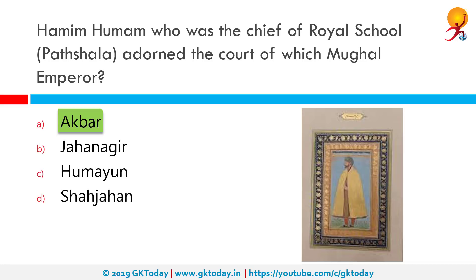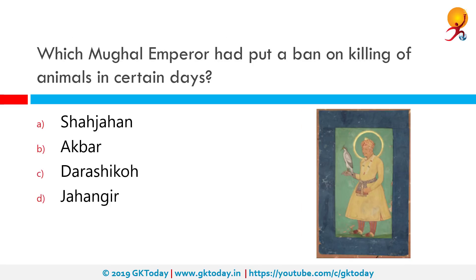Which Mughal Emperor had put a ban on killing of animals on certain days? Akbar had put a ban on killing animals on certain days in the year 1583.